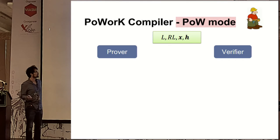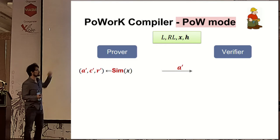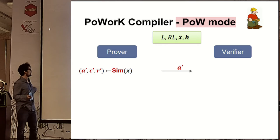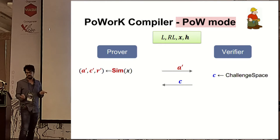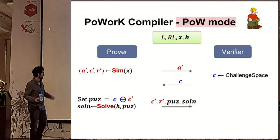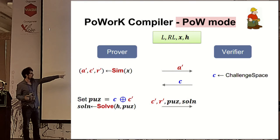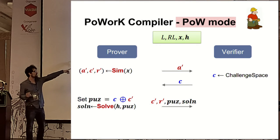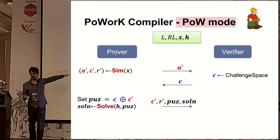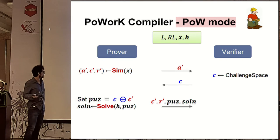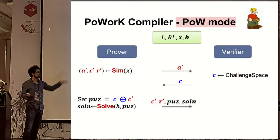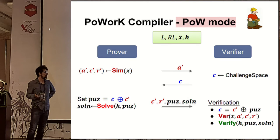In work mode — for indistinguishability — we use the HVZK simulator to simulate a valid transcript and send a' to the verifier. The verifier again responds with c. Now the prover does not have the witness; it must work. It computes the puzzle as the XOR of the given challenge c and the simulated challenge c', and because c is uniform and density holds, this XOR is with high probability a valid puzzle. The prover runs the Solver on this puzzle, outputs a solution, and sends it to the verifier, which runs the same checks.